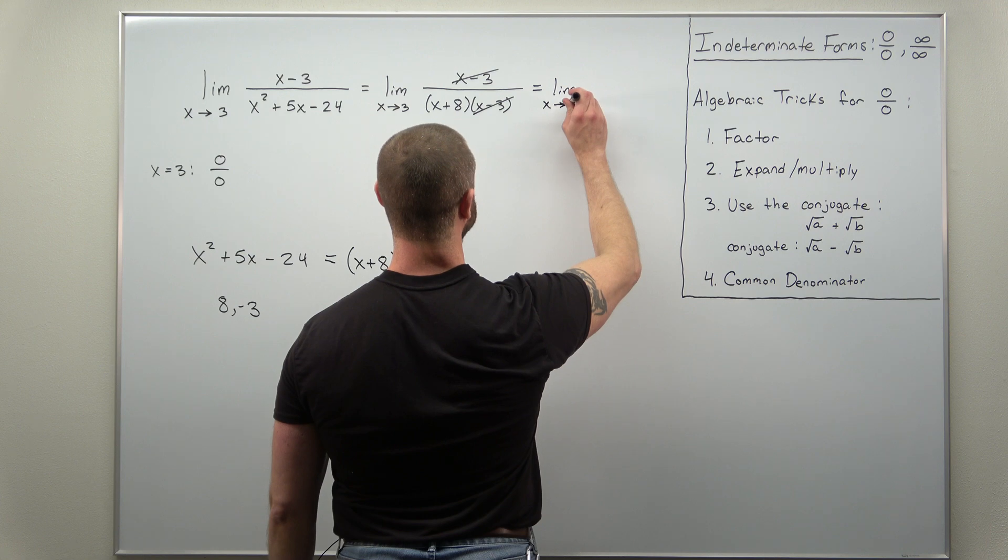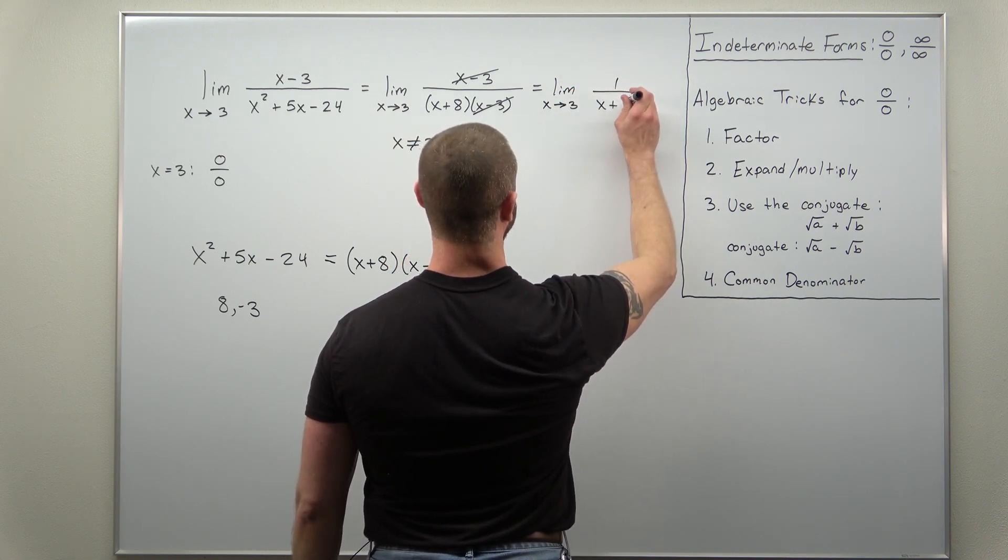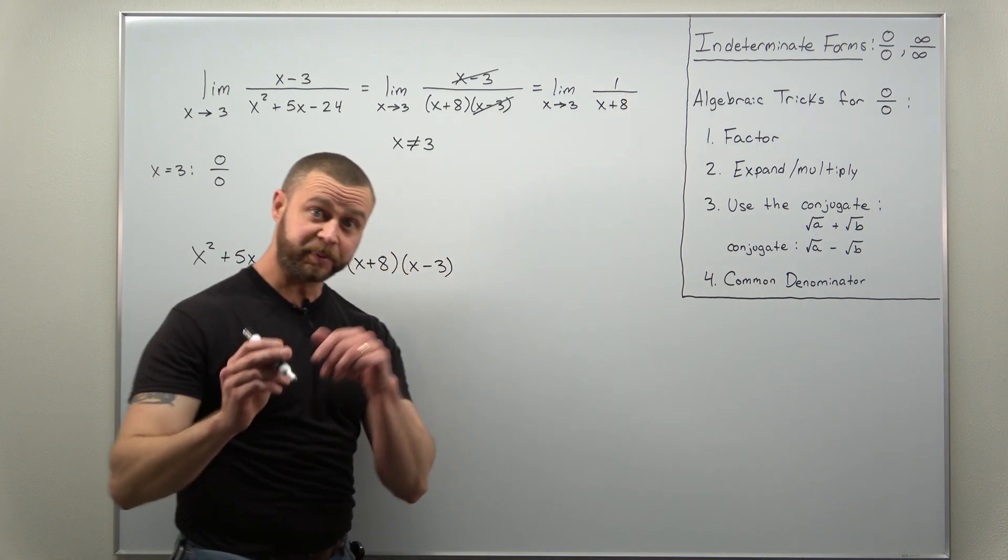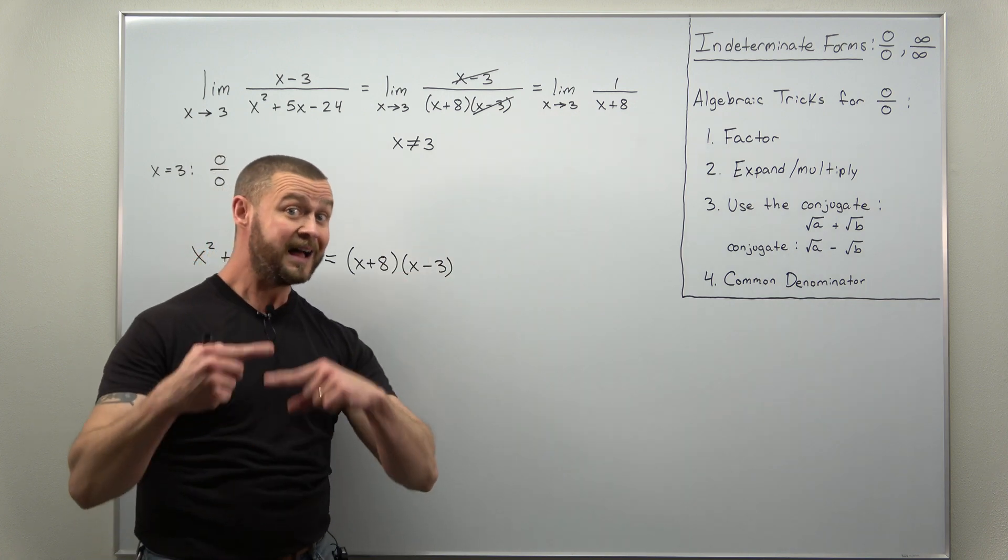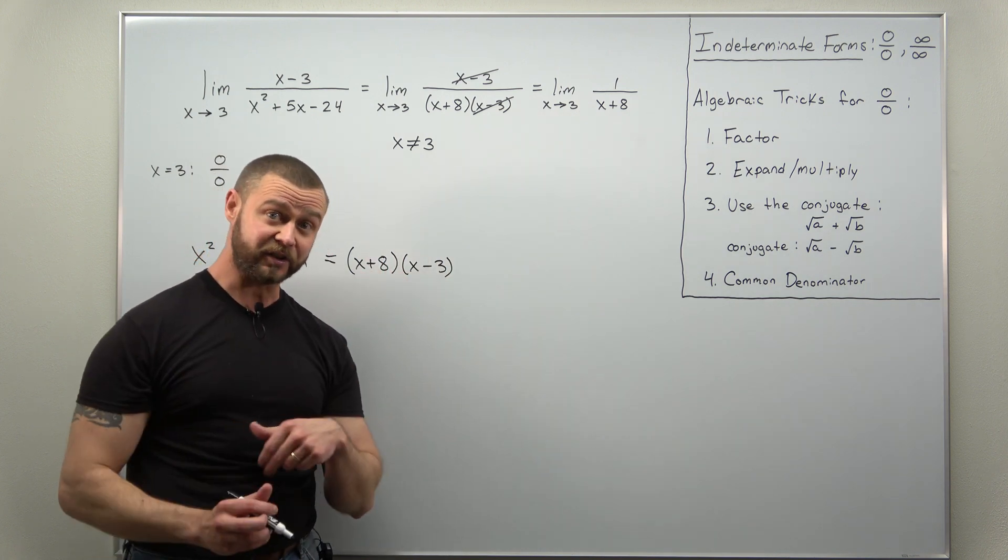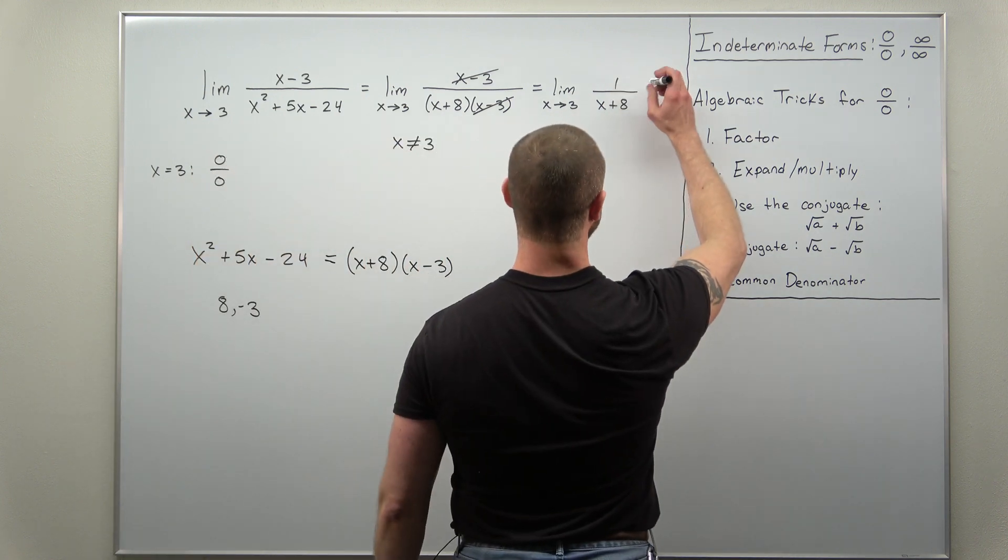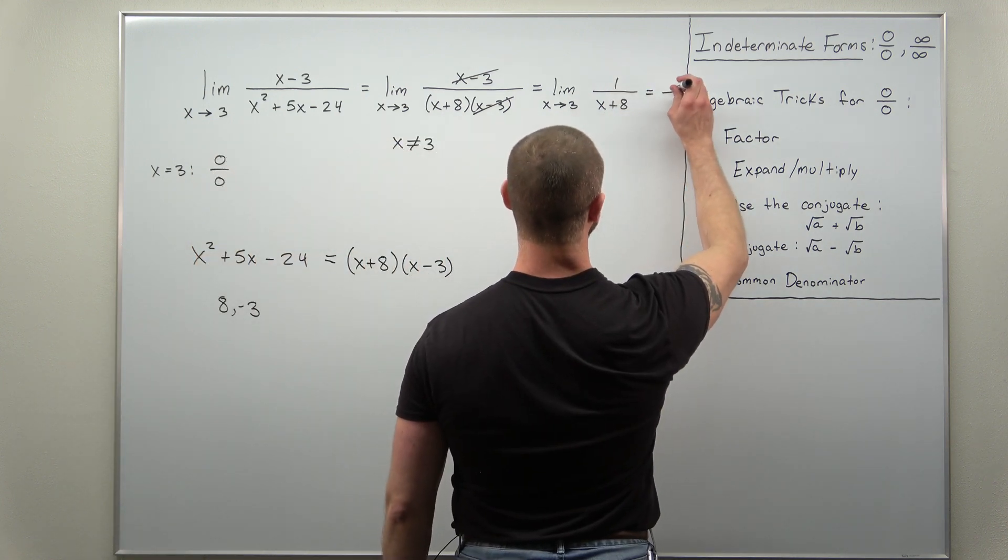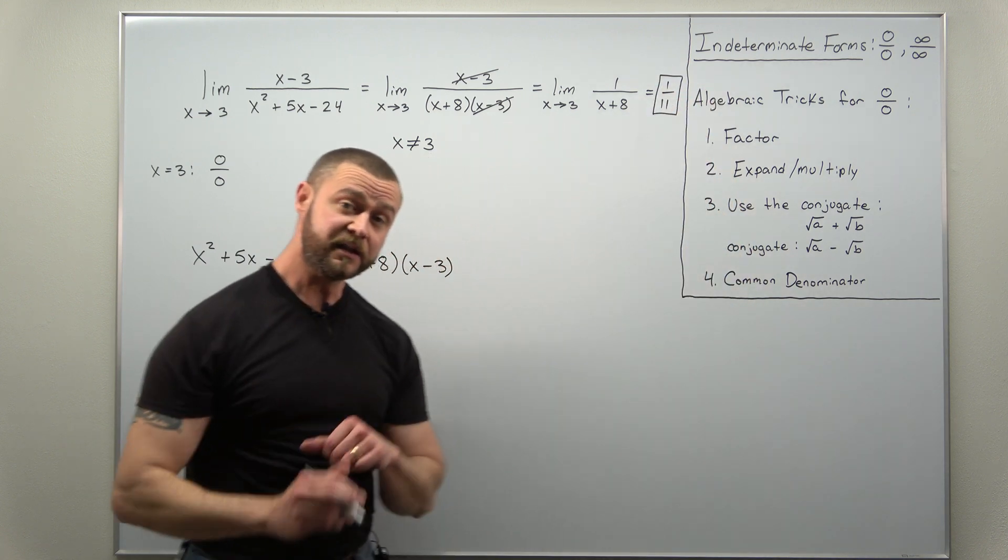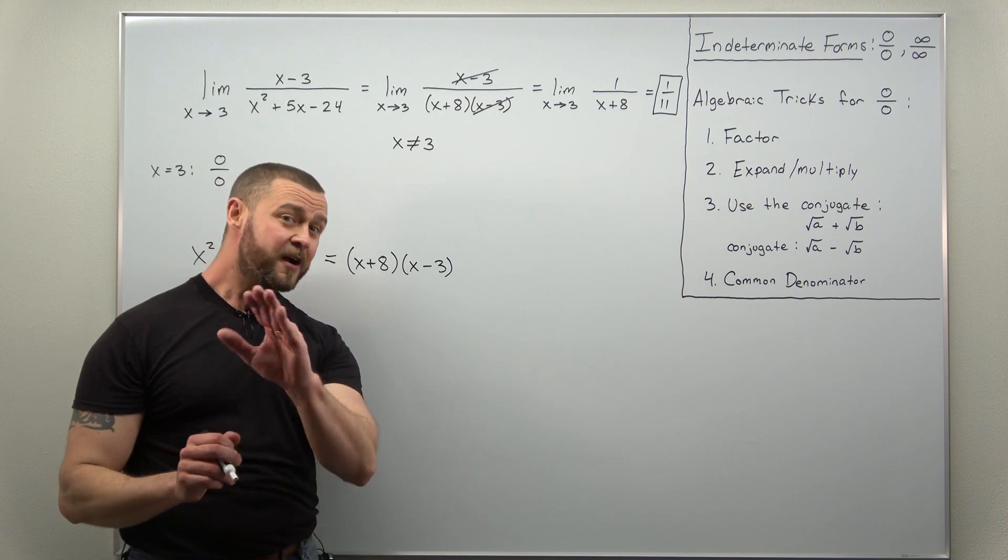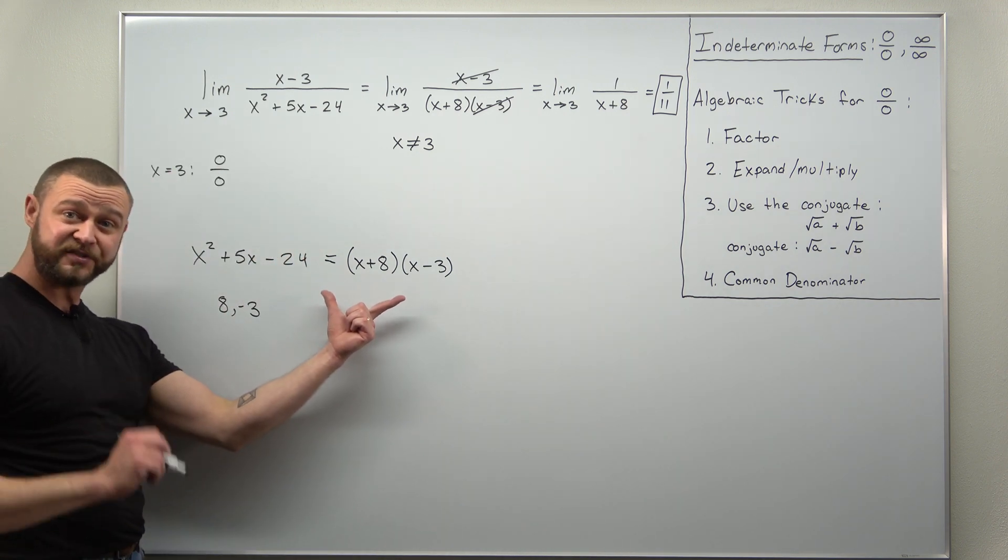The indeterminate form has canceled and we're left with one divided by x plus eight. And at this point with the indeterminate form eliminated or canceled we can just evaluate this by plugging in x equals three, and looks like what we get is one over eleven. And that is our limit here for this very simple example where the real work for the question was just basic factoring.